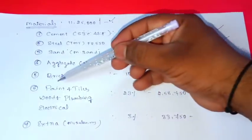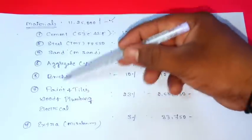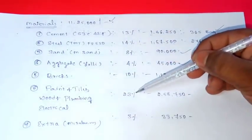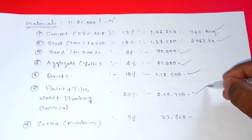Next is paint, tiles, wood, plumbing and electrical. So this is overall value, 23% of the cost. This is 3,45,000.